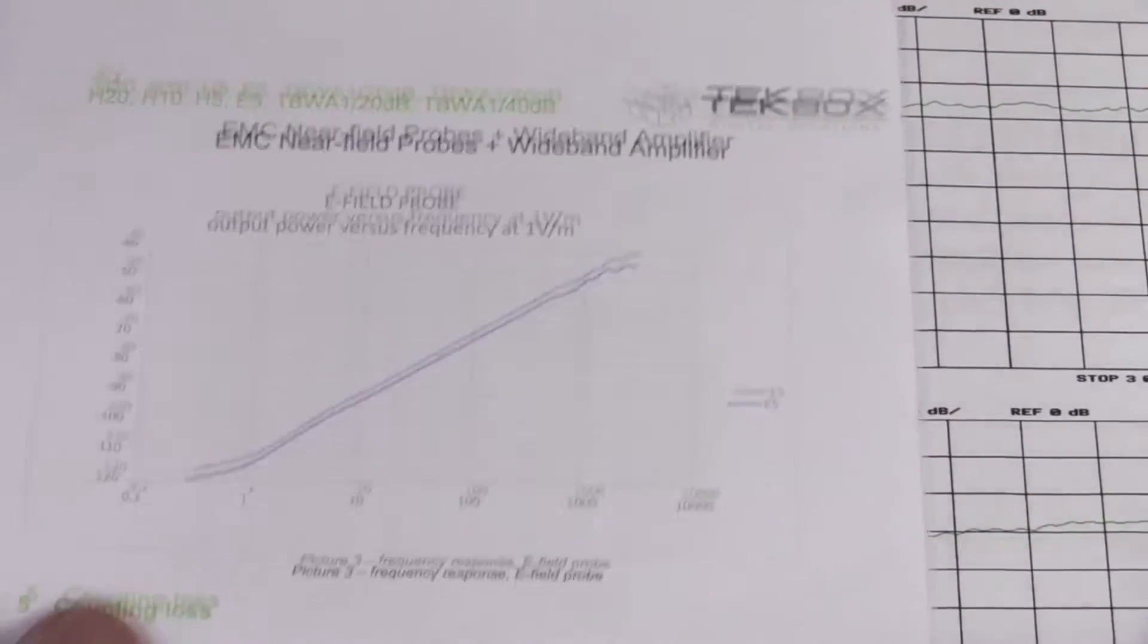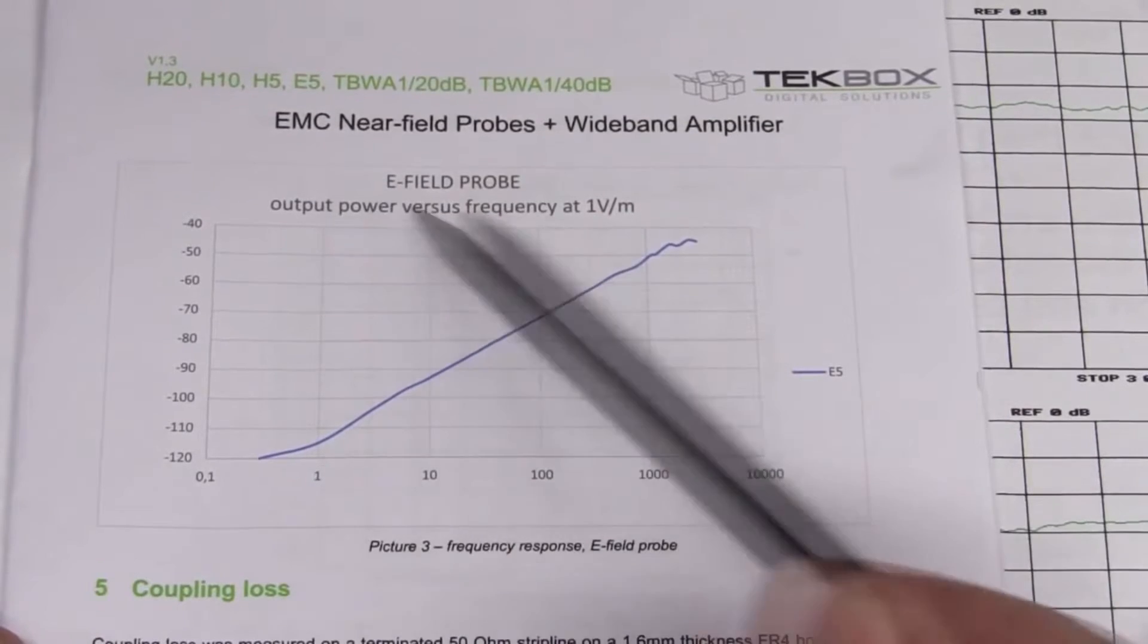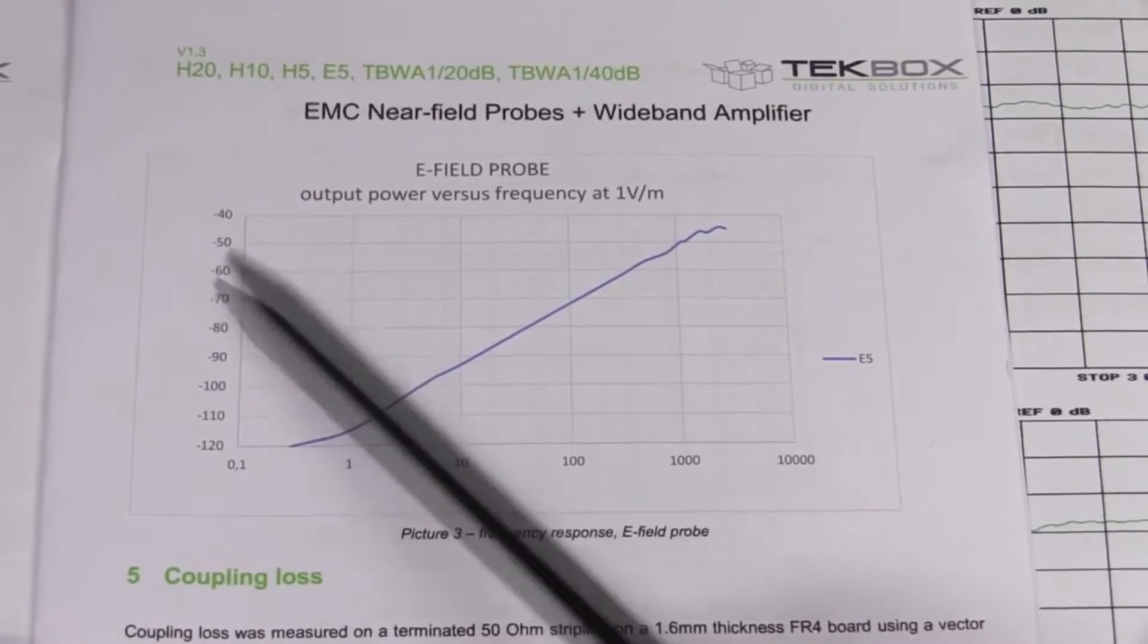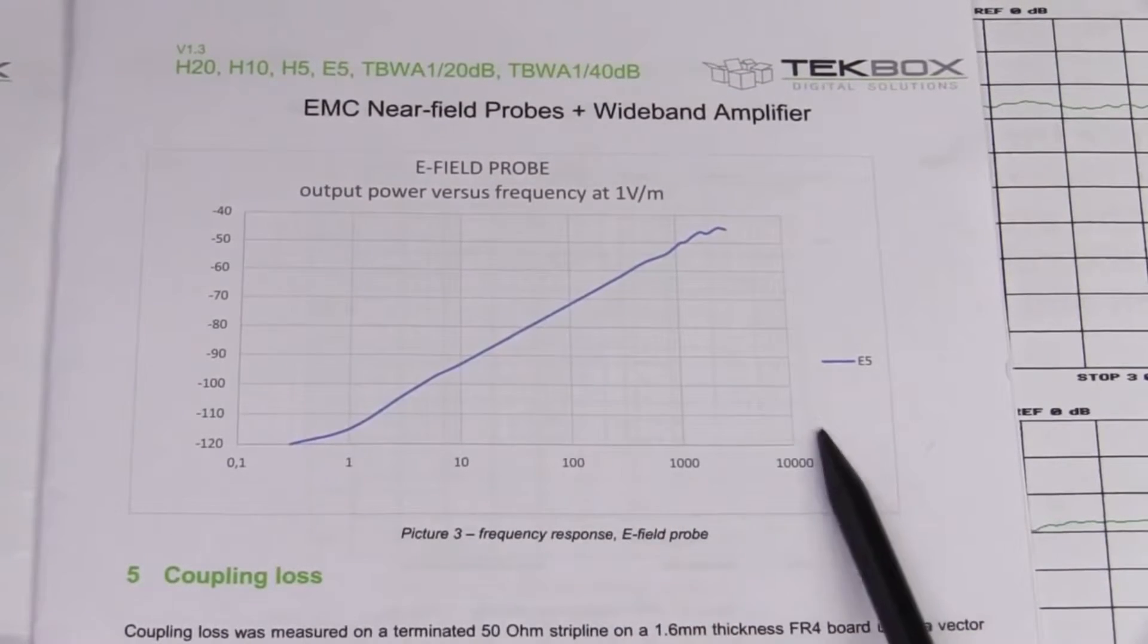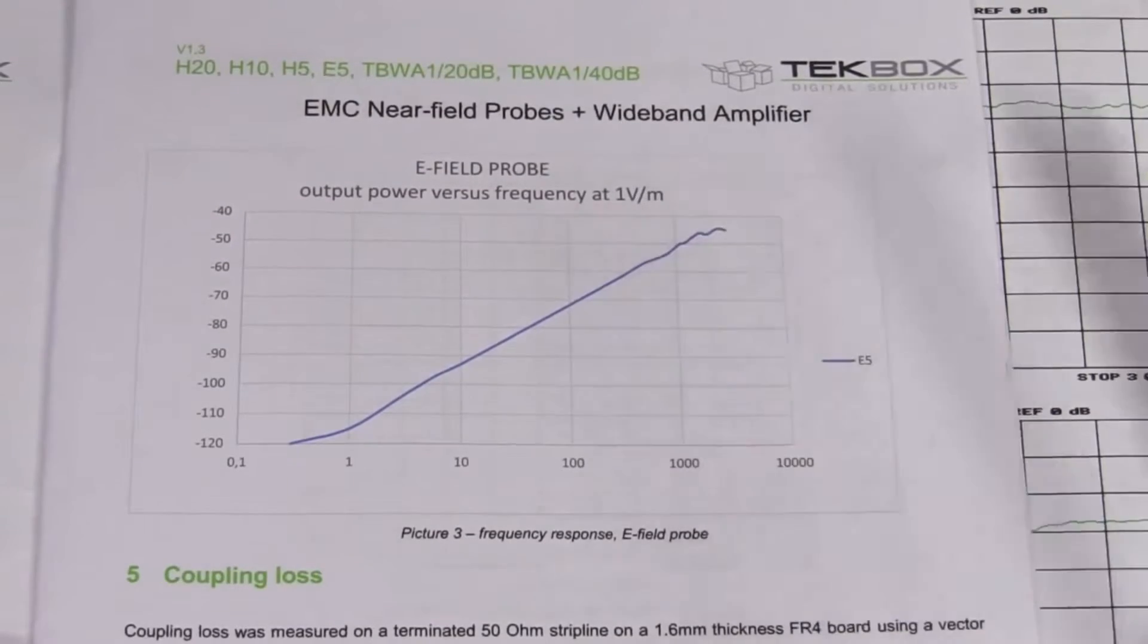Whereas your E-field probe, your electric field probe, is basically entirely different, because it's an electric field which is specified in volts per meter. So once again, you'll have an output power versus frequency for a known field, a fixed input field of one volt per meter.